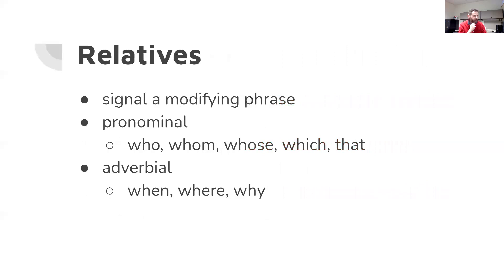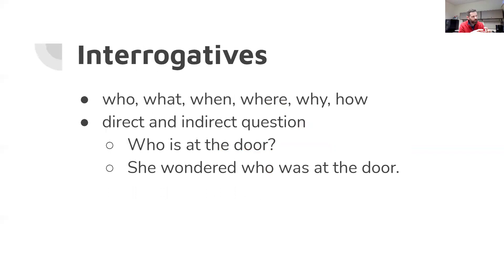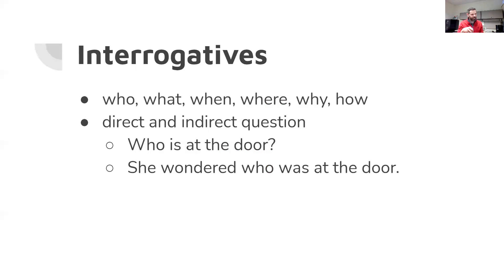Just a couple last categories. Relatives signal a modifying phrase — we have pronominal ones like who, whom, whose, which, and that. For example, 'The door that is broken needs to be fixed.' We also have adverbial relatives that answer when, where, and why. Interrogatives are very close to relatives and share some of the same words, but the difference is that interrogatives are used to ask questions — direct or indirect. They take the place of the thing being answered. For example, 'Who is at the door?' replaces 'someone,' and in an indirect question: 'She wondered who was at the door.'